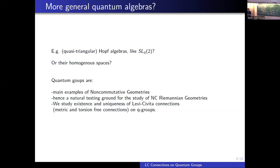Why consider exactly Hopf algebras? Because Hopf algebras are very rich. There is a Woronowicz bicoinvariant calculus on them — a well-understood object from the differential geometry point of view. So let's put on such a rigid, rich structure also a metric structure, and see what can be done in that rich context.